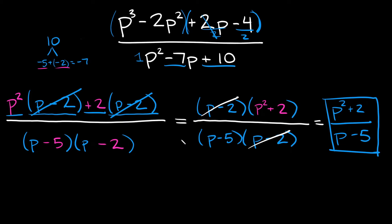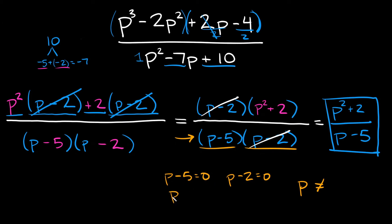Now the last thing is to look at our denominator to find what p values to exclude. Looking at all our factors in the denominator — p minus 5 and p minus 2 — we set each equal to 0. p minus 5 equals 0 gives p equals 5, and p minus 2 equals 0 gives p equals 2. Plugging in 5 gives 5 minus 5 equals 0, and 0 times 3 equals 0 — confirmed. Same for plugging in 2. So to avoid dividing by zero, p cannot equal 5 or positive 2.